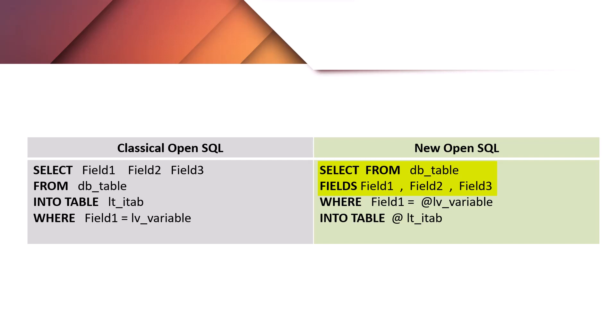The FROM clause can now be the first clause, followed by the column list starting with the explicit keyword FIELDS. As you can see here, the FROM clause is used first and then the field list is specified using the keyword FIELDS. These arrangements help to increase the readability and maintainability of select statements.